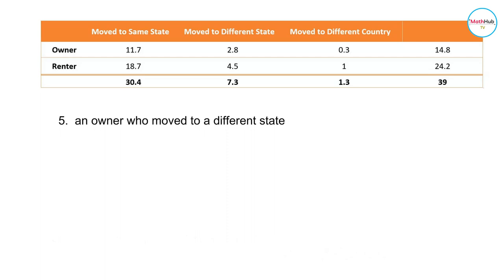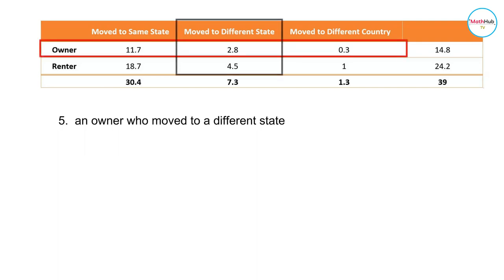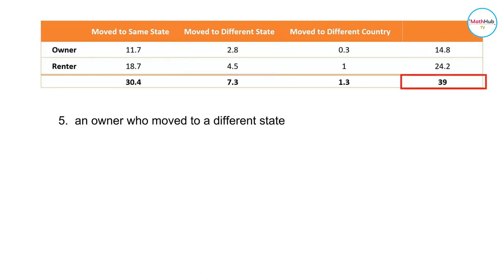Next, we want to find the probability that a randomly selected American who moved was an owner who moved to a different state. We look at the row for owners who moved to a different state, which gives us 2.8. So 2.8 divided by the total possible outcomes, which is 39 million. The probability is equal to 2.8 divided by 39, which is approximately equal to 0.07.